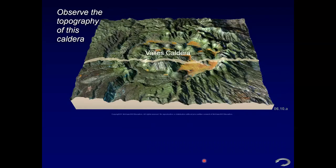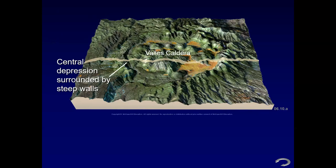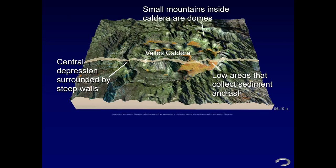Let's look at the Valles Caldera and its topography. It is circular with steep walls, flat areas, and hills in the circular area. It's really a central depression surrounded by steep walls, and these low areas collect sediment and ash. The small mountains inside the caldera are actually domes.